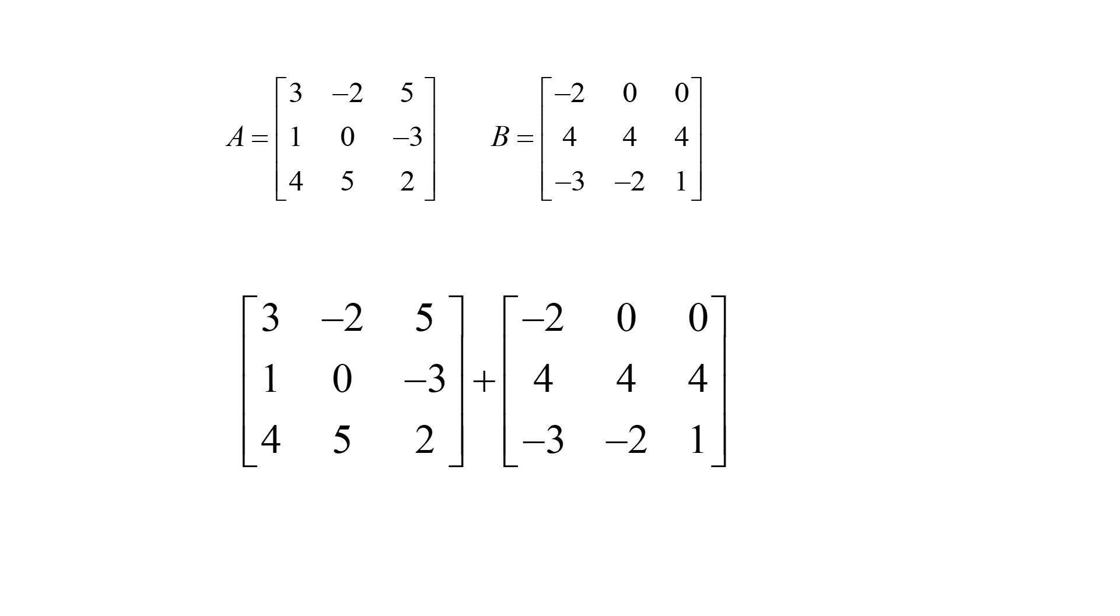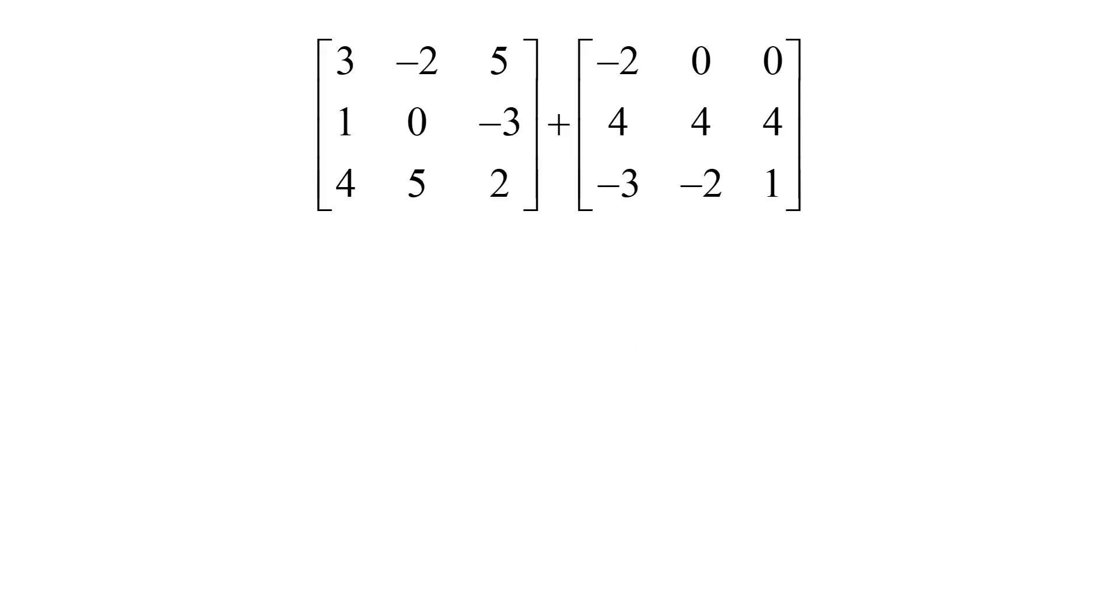In order to add them together, we do one cell at a time. For example, I can take 3 and -2 from the same position of each matrix. When I add that together, I get 1, and I do this for every position within the matrix.